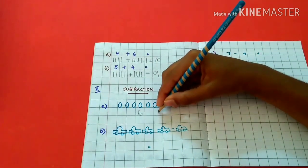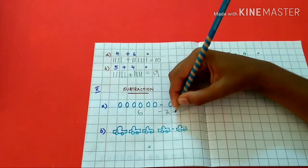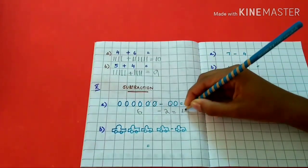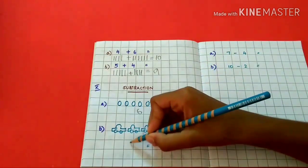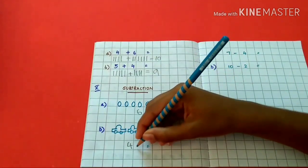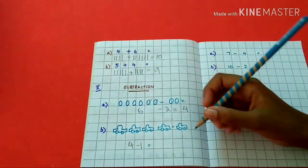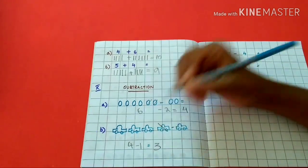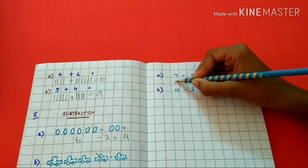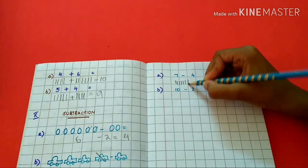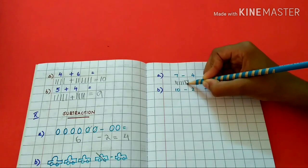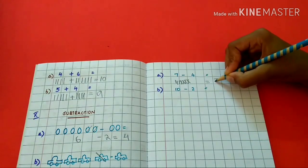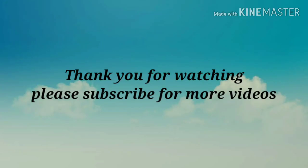6 minus 2 equals 4. 4 minus 1 equals 3. 7 minus 4 — answer is 3: 1, 2, 3.